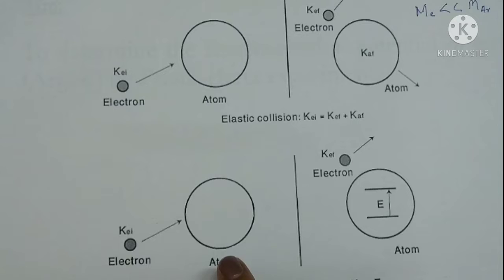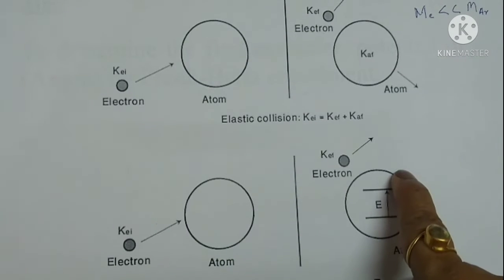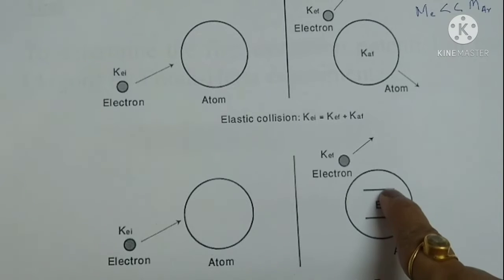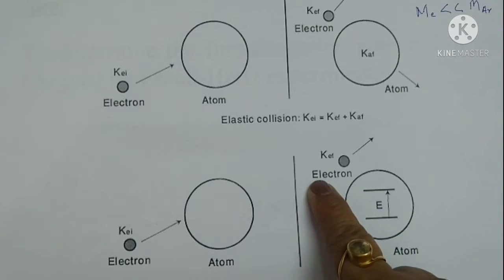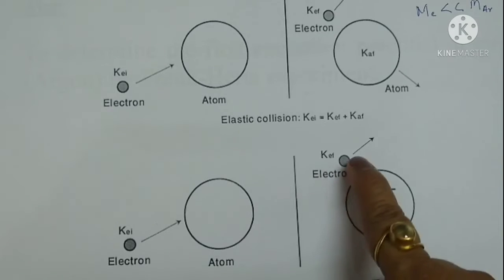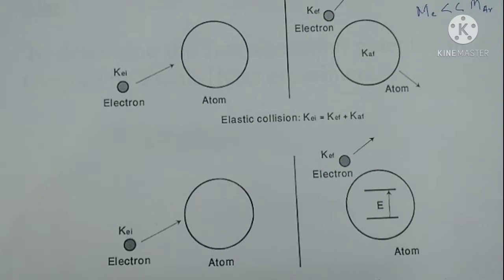But if on increasing the voltage, the energy of the electron is sufficient, more than 11.83 electron volts, it is used up by the argon atom to excite its own electron to the higher excited state. Thereby, the incident electron loses almost its energy and is not able to reach the plate. Therefore, the plate current falls.